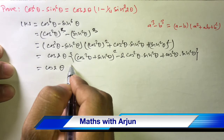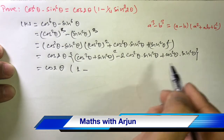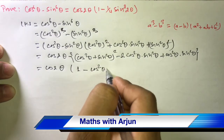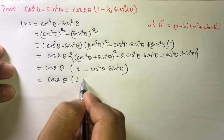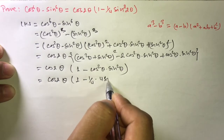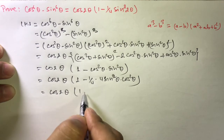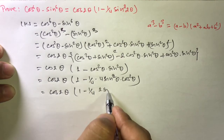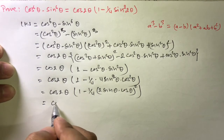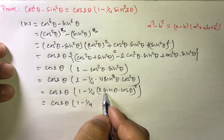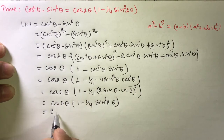Here cos²θ plus sin²θ equals 1, so we get 1 minus 2cos²θ sin²θ plus cos²θ sin²θ, which simplifies to 1 minus cos²θ sin²θ, multiplied by cos 2θ. Now, cos 2θ times bracket 1 minus 1/4 times (2 sinθ cosθ)², which equals cos 2θ times 1 minus 1/4 sin² 2θ, using sin 2A equals 2 sin A cos A. This equals RHS.